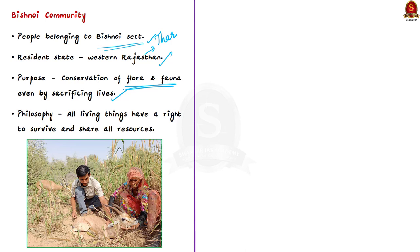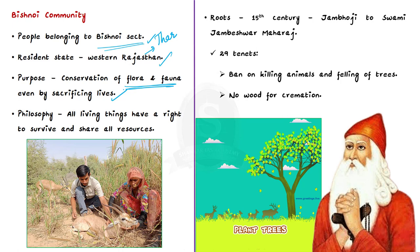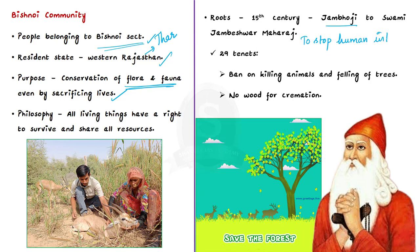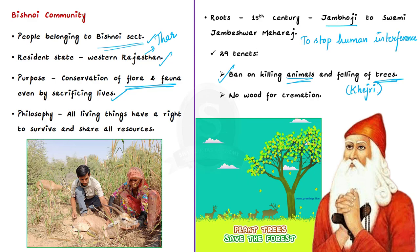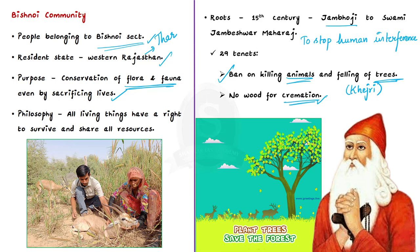The basic philosophy of this religion is that all living things have a right to survive and share all resources. In the 15th century, Jambuji, a resident of a village near Jodhpur, had a vision that the cause of drought and hardship was mainly due to people's interference with nature. He became a sanyasi and came to be known as Swami Jambeshwar Maharaj, from whom the Bishnoi sect began. He laid down 29 tenets for his followers, including a ban on killing animals, a ban on felling trees — especially the Khejri tree — and even avoiding use of wood for cremation.